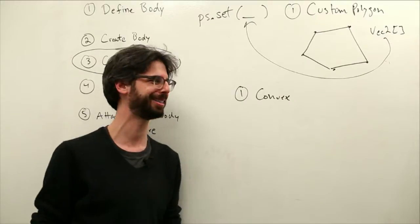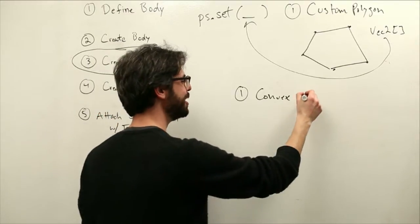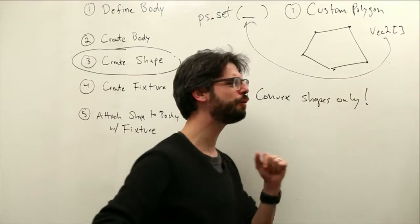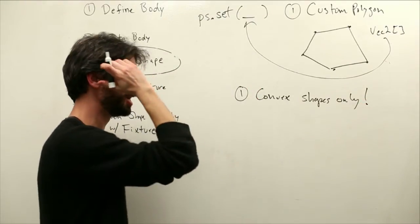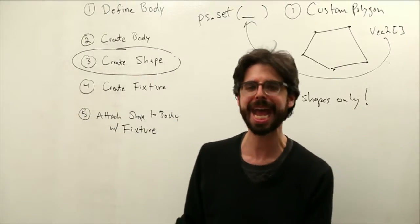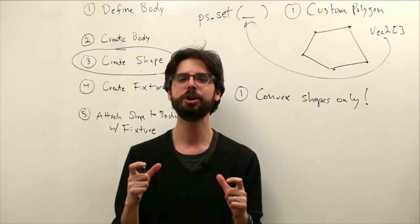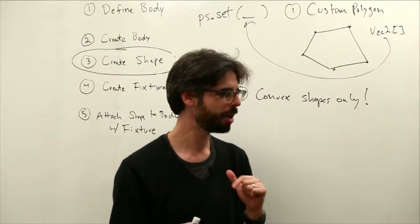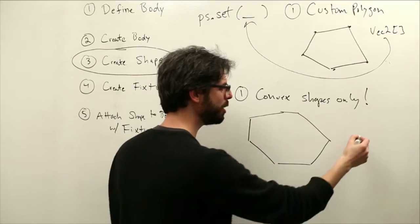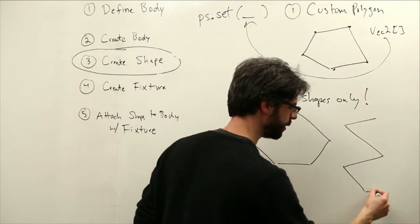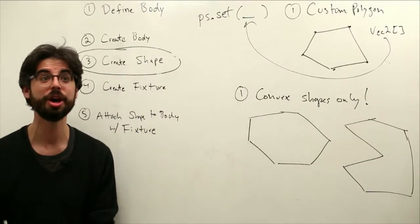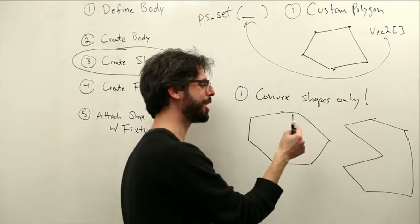But convex shapes only. There's actually a new version of JBox2D, so I might have to update all of these someday, but I haven't updated yet. But convex shapes only. A concave shape is a shape whose surface turns inward, right? So this is a convex shape, if I'm drawing this correctly. And here's a concave shape.